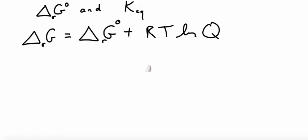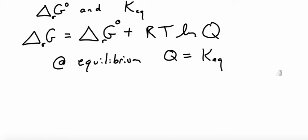Let's look at what happens to this equation when we say that we're at equilibrium. At equilibrium, we know two things. First of all, we know Q is equal to K equilibrium. K equilibrium is just the value of Q when we're at equilibrium.